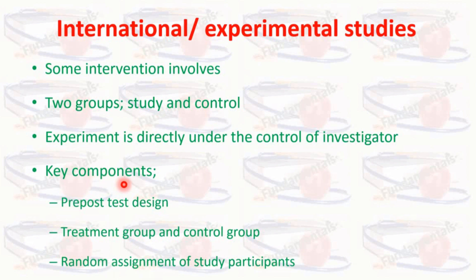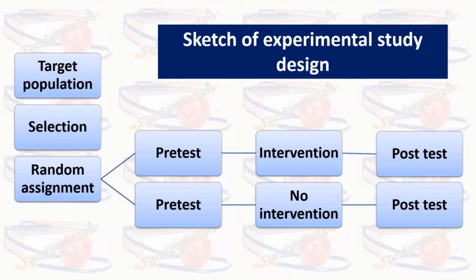There are three key components of an experimental study design: a pre-post test design, a treatment group and a control group, and random assignment of study participants. A pre-post test design requires collection of data on study participants' level of performance before the intervention is given — that is the pre-test — and then you collect the same data on similar participants after the intervention was given — that is the post-test. This design is the best way to ensure that the intervention had a causal effect.